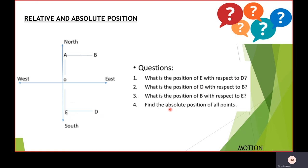Now, let's find the absolute position of all points. So to tell the absolute position, you have to take the standard point as O and then for A, it would be north. For B, it would be northeast. For D, it would be southeast. And for E, it would be south.